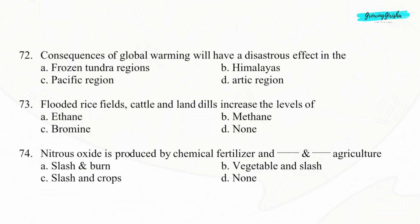Question 72. Consequences of global warming will have a disastrous effect in the Option A: Frozen tundra regions.